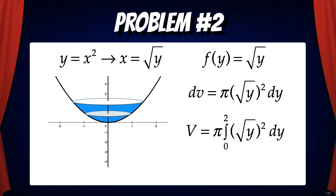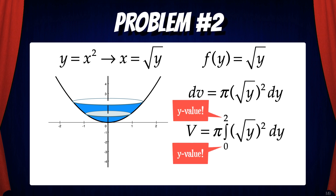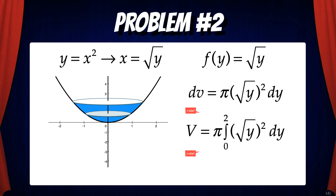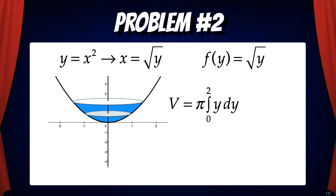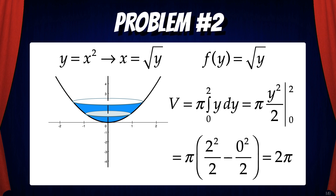So V equals π times the integral from 0 to 2 of (√y)² dy. Note that the limits of integration are y-values because we're adding the volumes of the disks stacked horizontally in the y direction. This simplifies to π times the integral from 0 to 2 of y dy. Using the fundamental theorem of calculus, that gives us π y²/2 evaluated from 0 to 2, which equals π times (2²/2 minus 0²/2), giving us 2π.